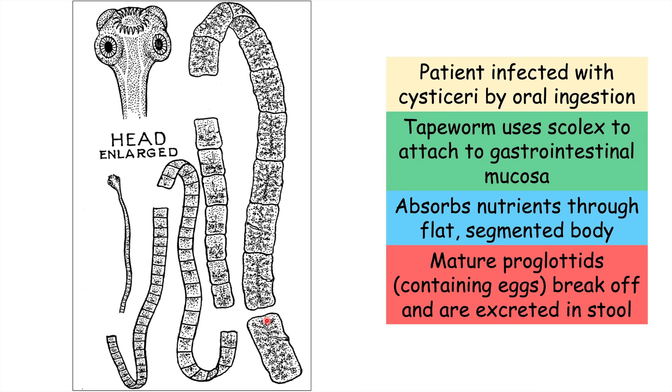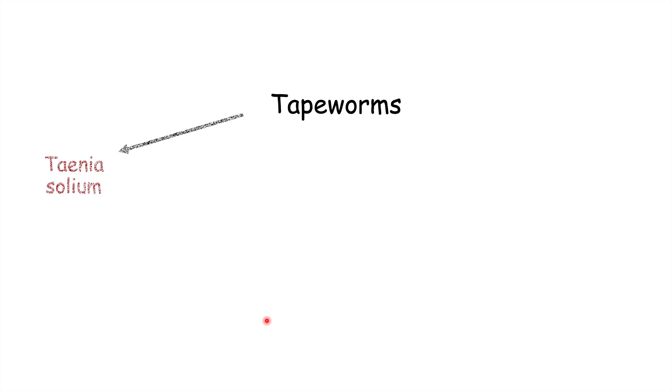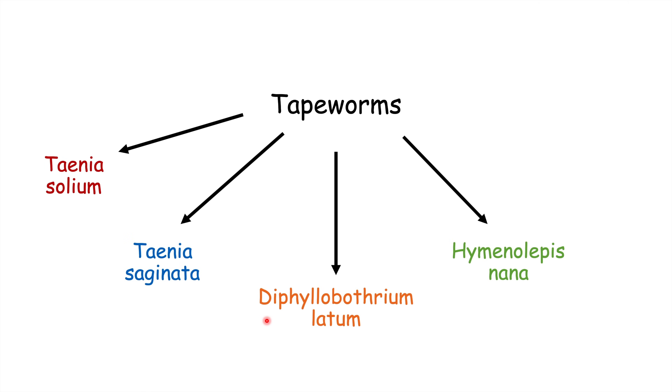That is a brief background on the anatomy and pathophysiology of a tapeworm infection. Now we're going to get into more specific detail as to particular species of tapeworm. The ones that are very important in infecting humans are: Taenia solium, Taenia saginata, Diphyllobothrium latum, Hymenolepis nana, and Dipylidium caninum.